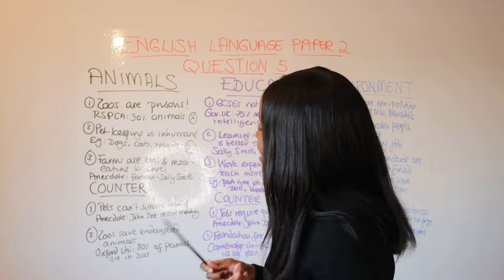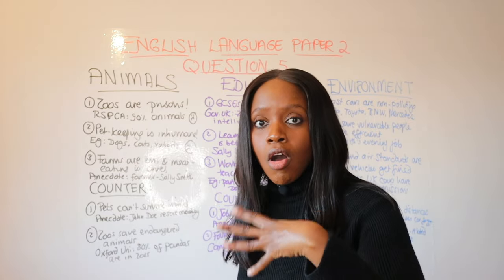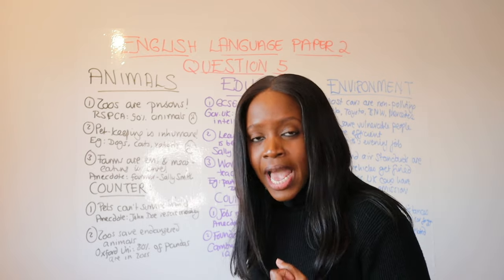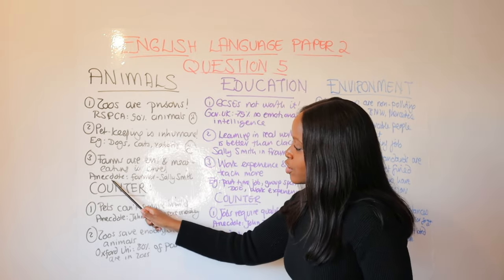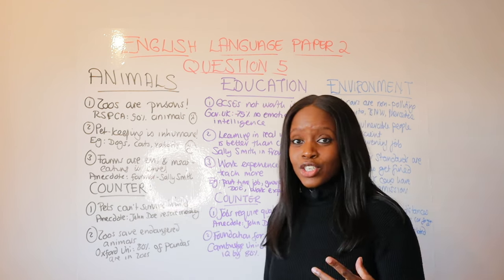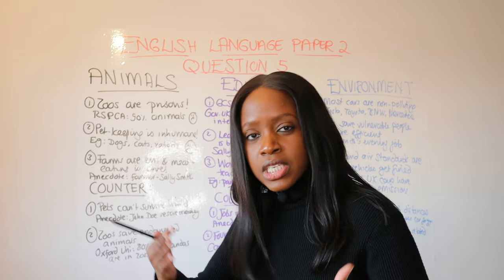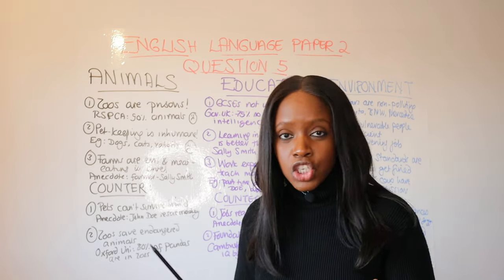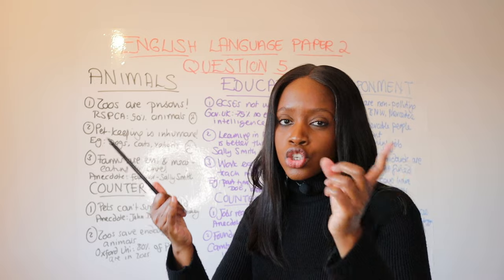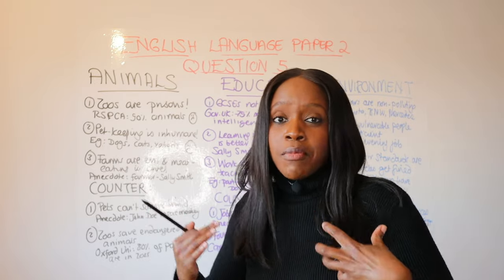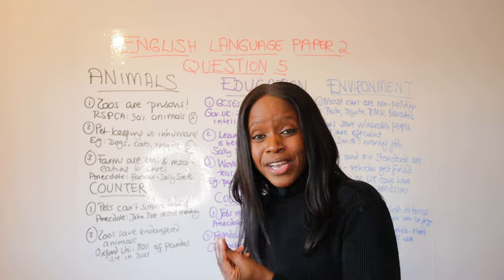The third argument for any animal welfare question is that meat eating and farms that keep animals like cows are evil. They overbreed animals and engage in cruel practices, and by extension it's wrong for us to consume meat. Use the anecdote of farmer Sally Smith, who previously kept a farm of cows but found the industry inhumane, so she sold all her animals and converted her farm to producing vegetables.